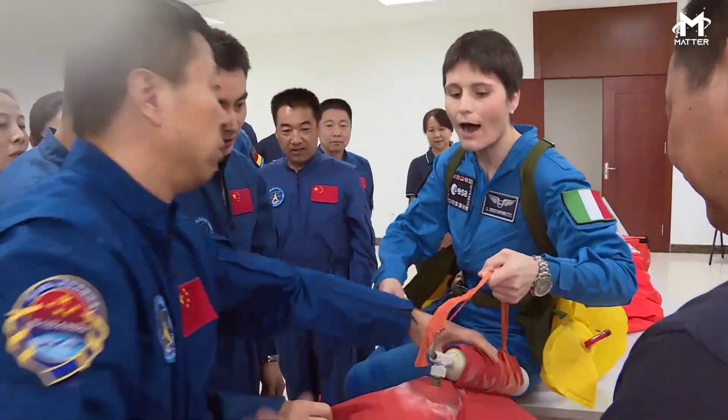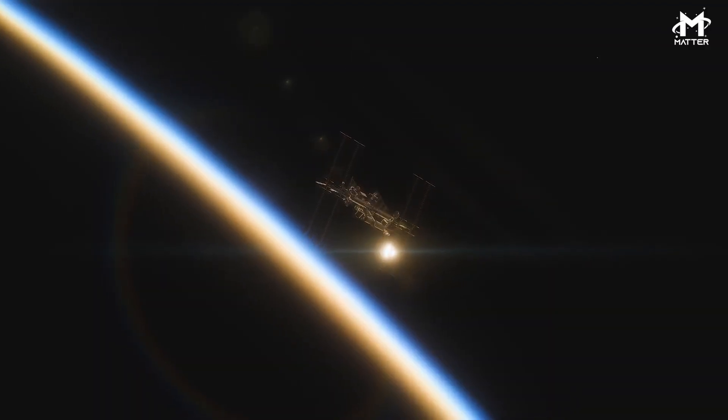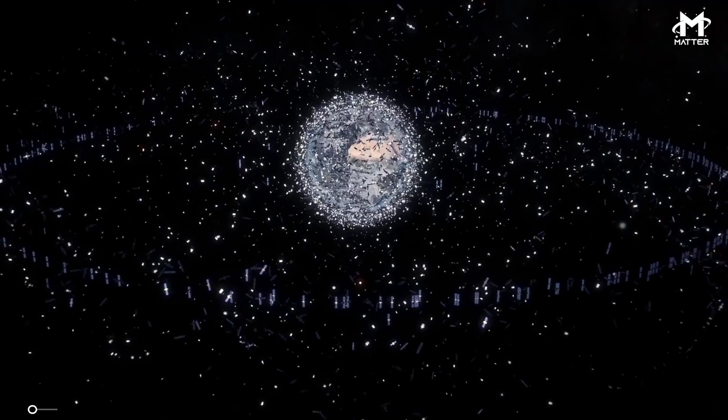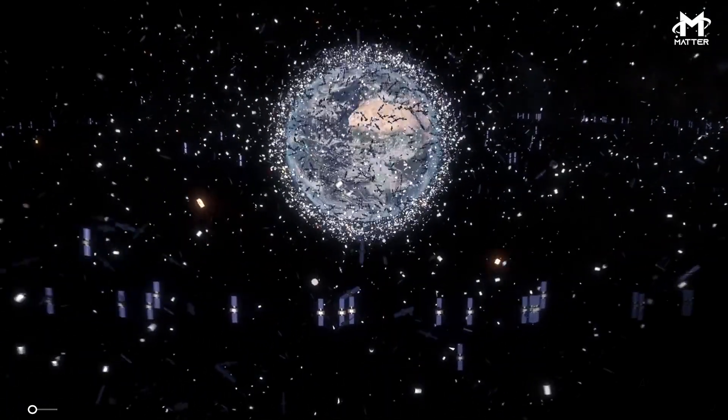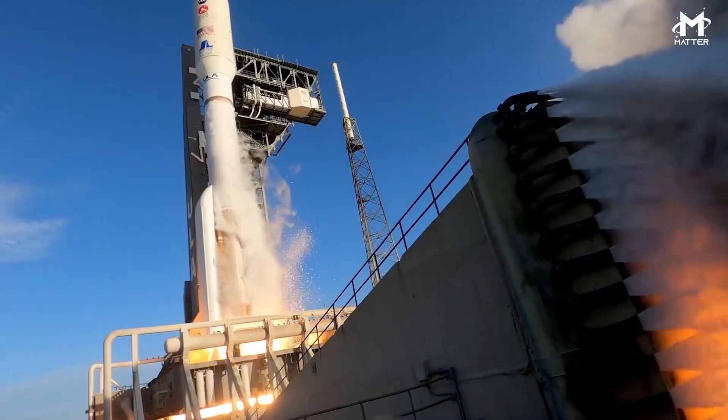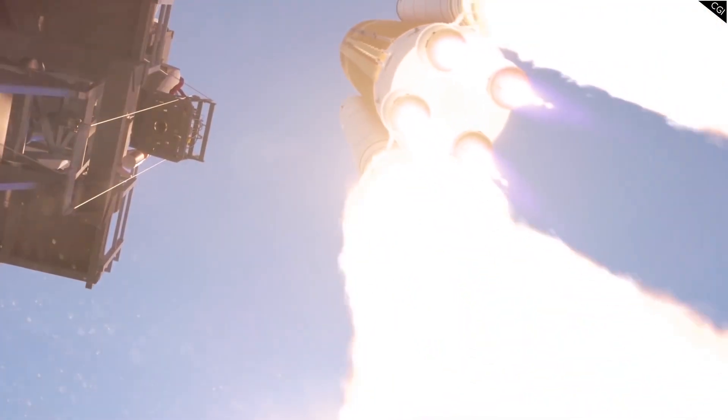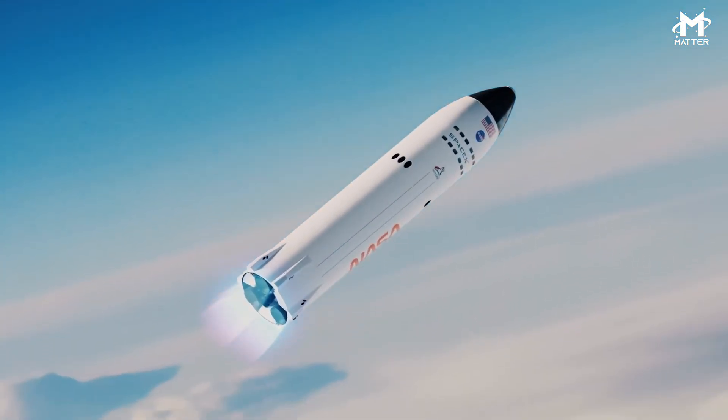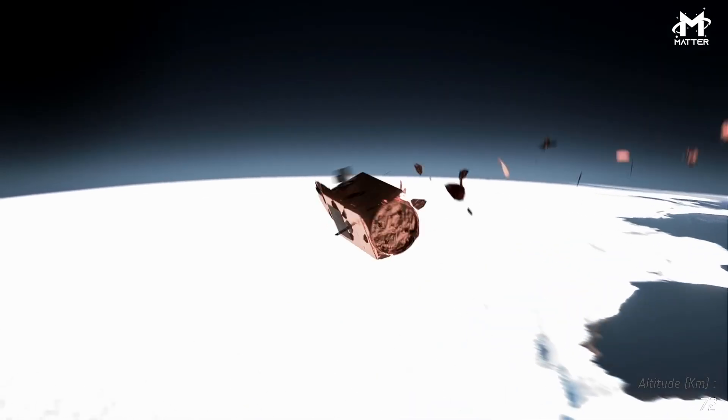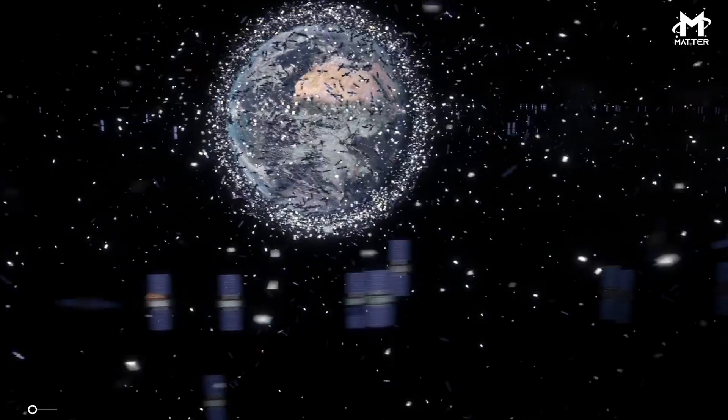Space agencies around the globe have put a lot of equipment into space. From satellites, probes, rockets and space stations, all of this equipment requires a lot of moving parts to get them out of Earth's atmosphere. Parts of these parts never make it back down to the surface after they either break or are destroyed. These pieces of debris continue to orbit Earth and are added to the natural meteoroids as dangerous obstacles.